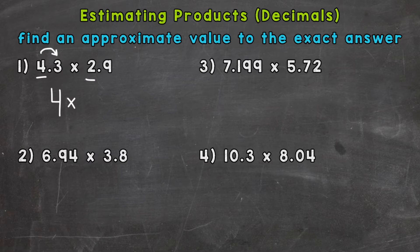Times, well, 2.9, let's see if this is closer to 2 or 3. So look next door, and that 9 tells us that we round up to 3, that we are closer to 3. So we can do 4 times 3 in order to get an estimate here.